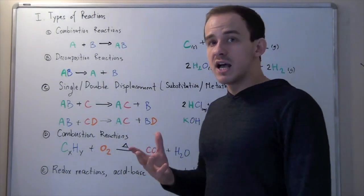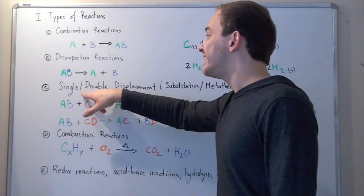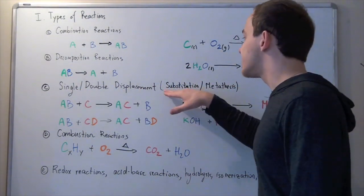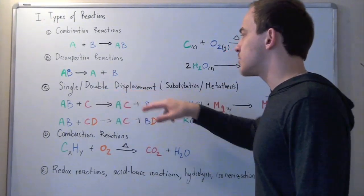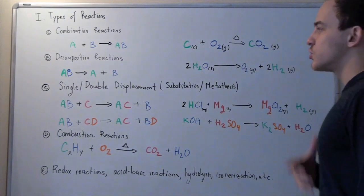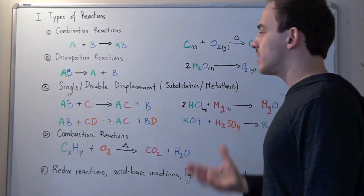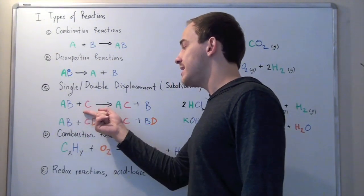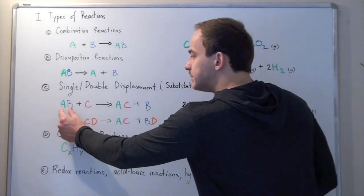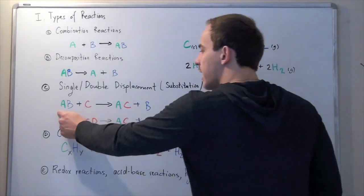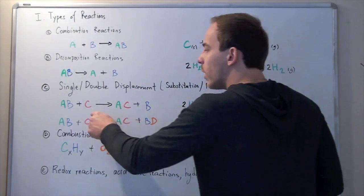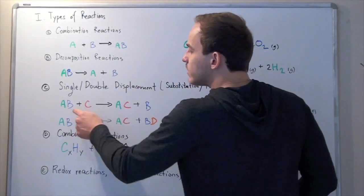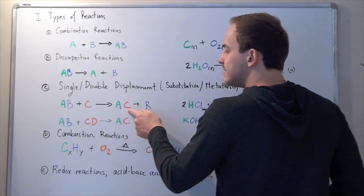Now let's look at a third and fourth type: single and double displacement reactions. Single displacement reactions are also known as substitution reactions, and double displacement reactions are also known as metathesis reactions. In a single displacement reaction, we have AB plus C. The bond between A and B is broken, B dissociates from A, and C combines with A — displacing B and forming AC plus B.